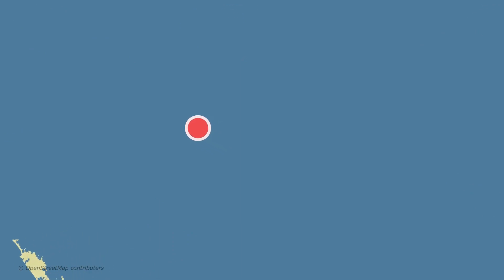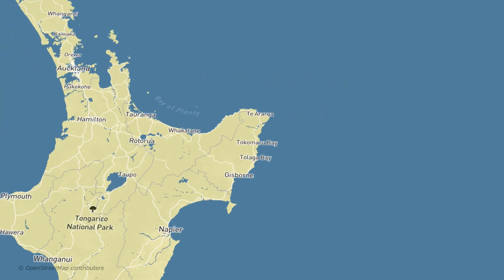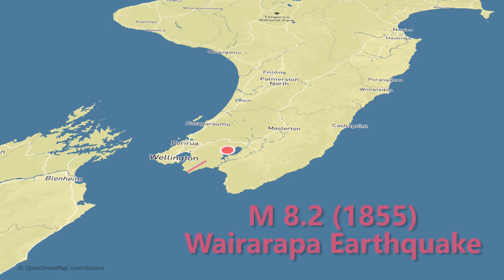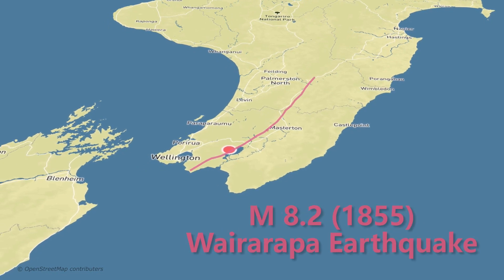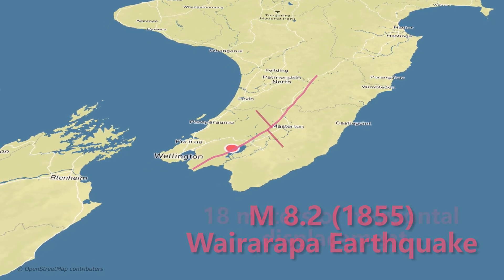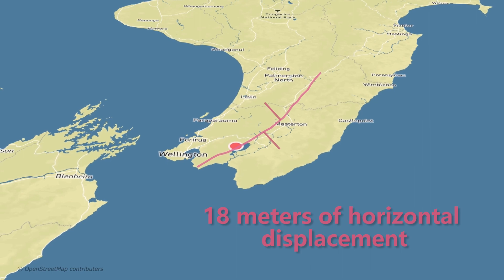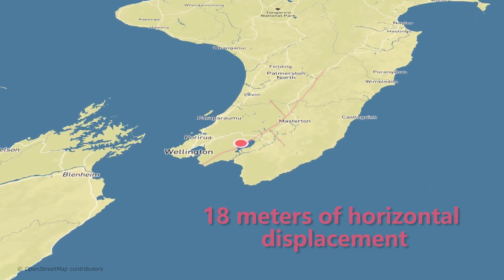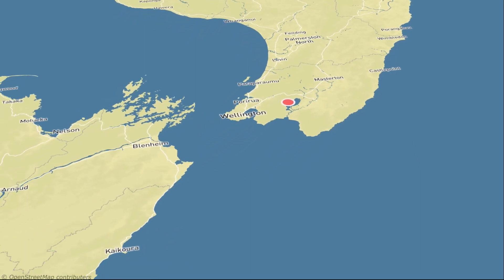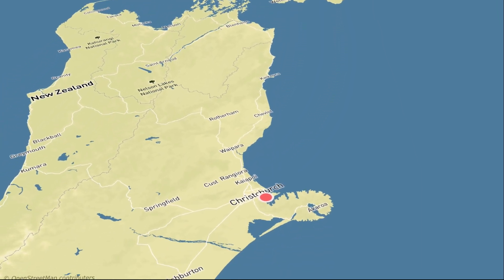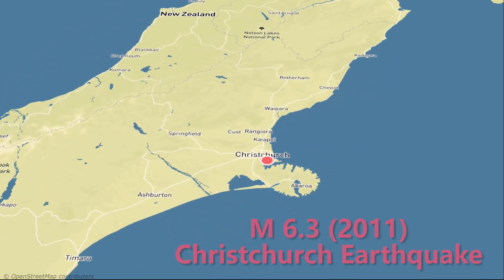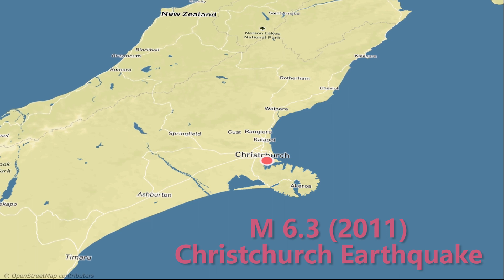This magnitude 8.1 event was the largest that's happened in the area since a magnitude 8 earthquake struck in 1976. The largest ever recorded earthquake in New Zealand occurred on the Wairarapa Fault in 1855 and resulted in 18 meters of horizontal land movement and pushed up the nearby Rimutaka range more than 6 meters. And just a decade ago, a much weaker magnitude 6.3 quake struck near the city of Christchurch and unfortunately killed 185 people.